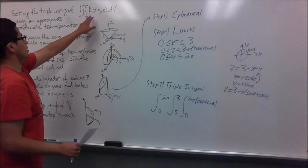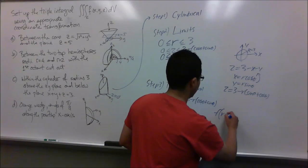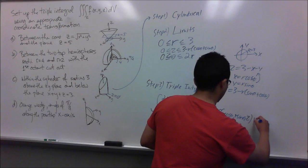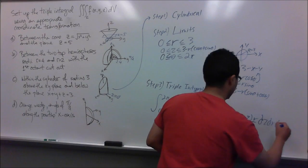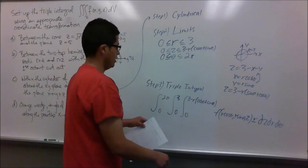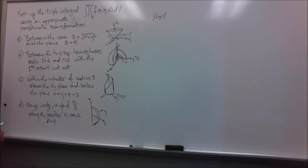So the upper z limit is 3 minus r cosine theta plus sine theta. Since it is a cylinder going around the xy-plane, theta goes from 0 to 2 pi. In step three we set up the triple integral: f of r cosine theta for x, r sine theta for y, z, with the Jacobian extra factor r, giving dz dr d theta. The r limits go from 0 to 3 and theta from 0 to 2 pi. That is our triple integral.